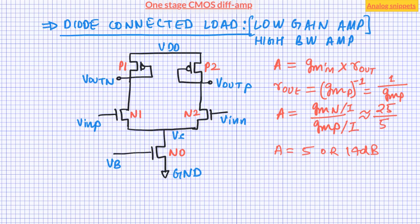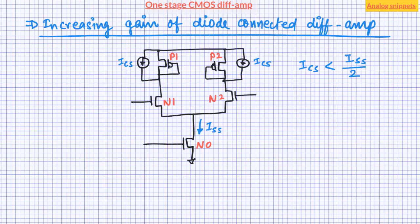The low gain property is especially well suited for auto-zero offset cancellation at the output. If this gain is too low, there are a couple of ways to increase it. One way is to connect current sources in parallel with the diode-connected load. If the amplifier is biased at current ISS, these current sources must be less than half of this current. When added, the current carried by the diode-connected transistor reduces, and hence its GM also reduces, increasing the gain. For example, if the current is reduced to one-fourth, transconductance becomes half and gain doubles.